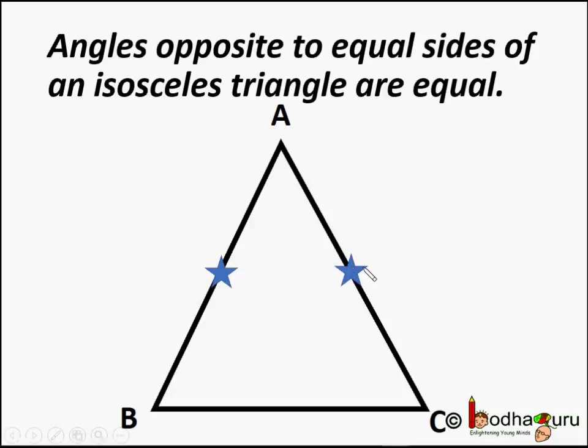So in triangle ABC, AB is equal to AC. And we need to prove angle B is equal to angle C. That is angles opposite to equal sides are equal.